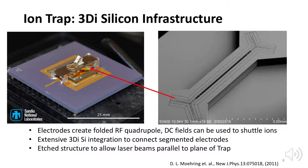Ion traps are now made from 3D silicon containing RF electrodes and regions where the ions can be shuttled back and forth by surface electrodes connected down through the structure to pins on the opposite side. The laser beams are parallel to the substrate and orthogonal to the line of ions.